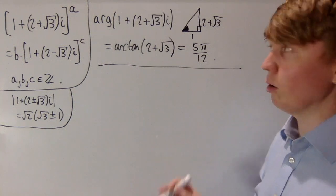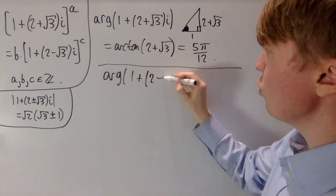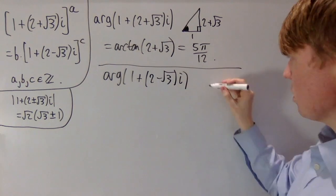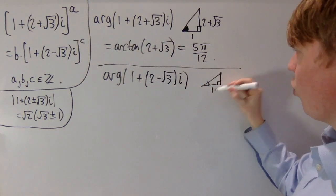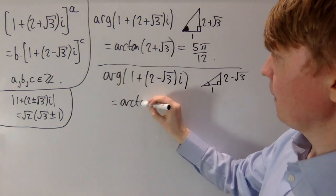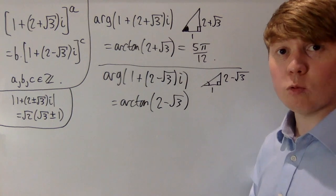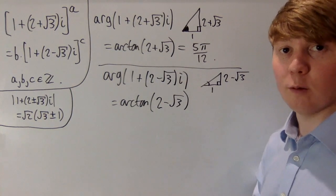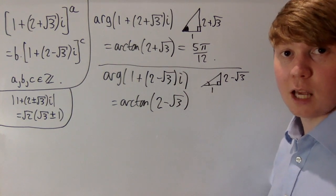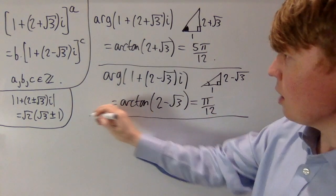For the argument of our second complex number, 1 + (2 − √3)i: since 2 − √3 is still positive, we again use arctan. The argument is arctan((2 − √3)/1) = arctan(2 − √3). Now tan(15°) = 2 − √3, and 15° equals π/12 radians, so the argument is π/12.